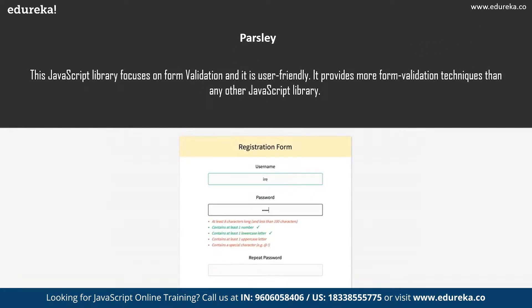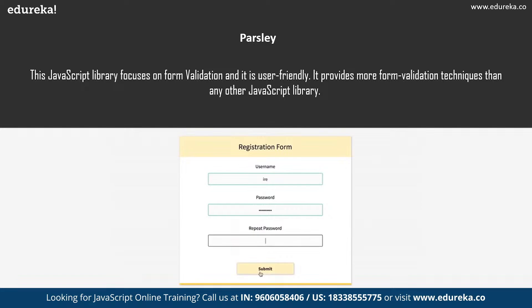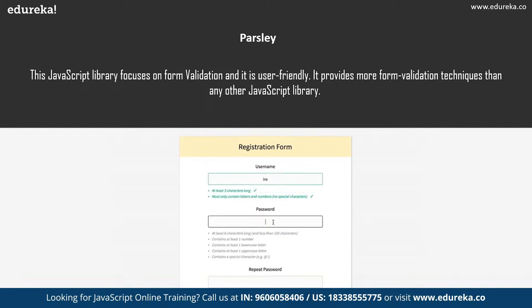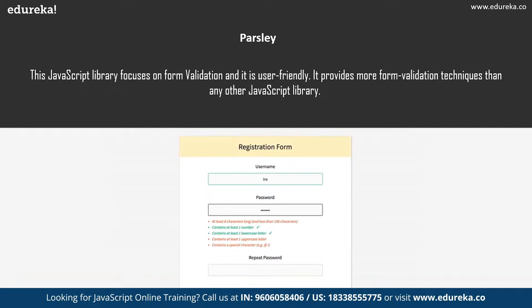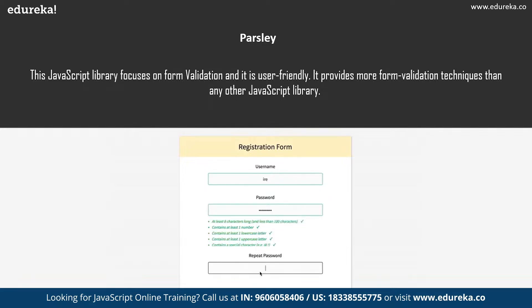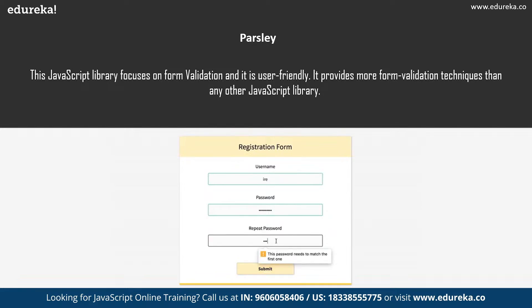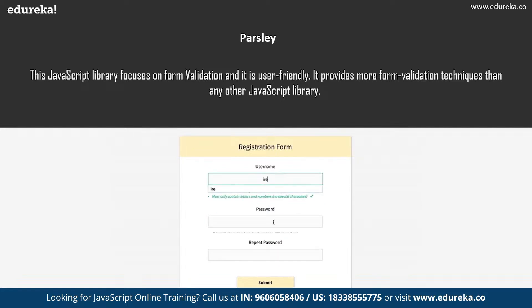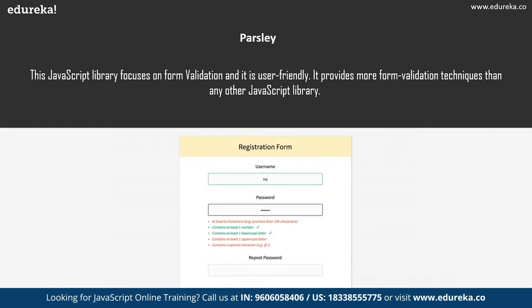Next we have Parsley. If your next project incorporates any sort of forms, Parsley is the library you are looking for. This JavaScript library actually focuses on form validation and is also very user-friendly. It works wonderfully with Garlic — the JavaScript library that keeps form fields data until submitted. Parsley is definitely one of the best choices for building any creative website and provides more form validation techniques than any other JavaScript library. So if you're working with any sort of form validation or email validation, you must go for Parsley.